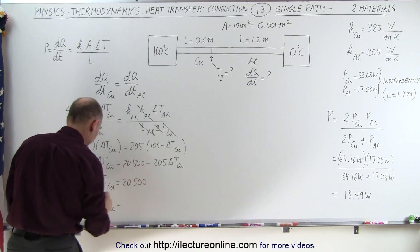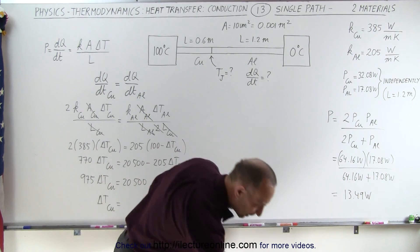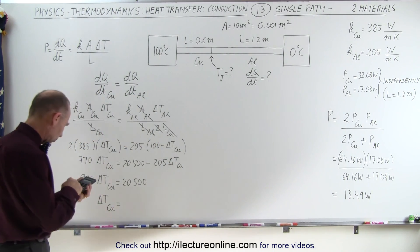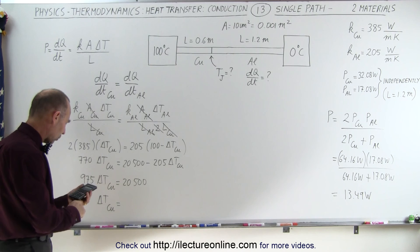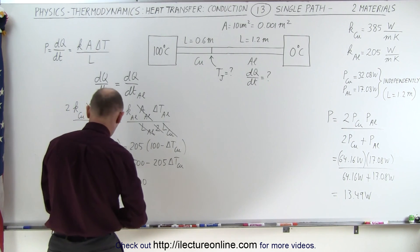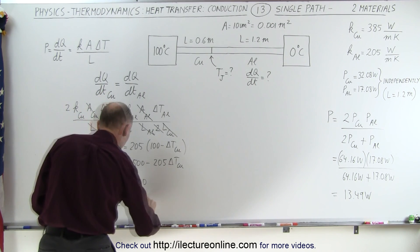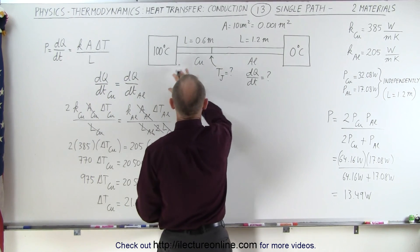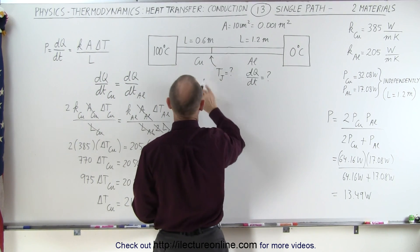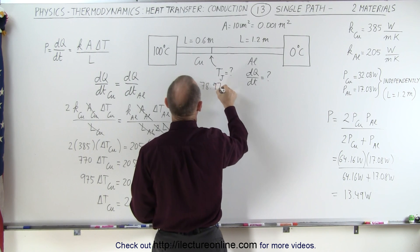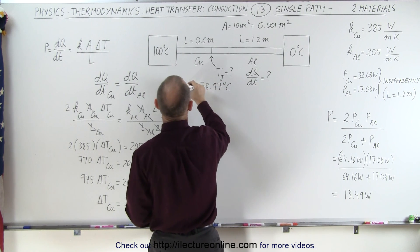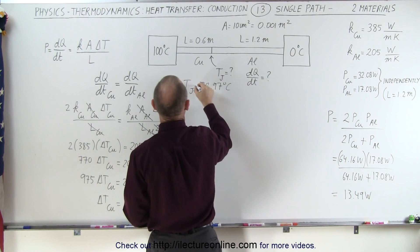And let's see what we get: 20,500 divided by 975, and we get 21.03 degrees, which means that the junction temperature is 100 minus that, which means that is equal to 78.97 degrees centigrade for the temperature at the junction.